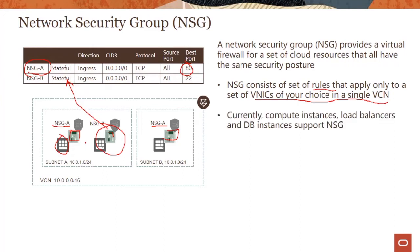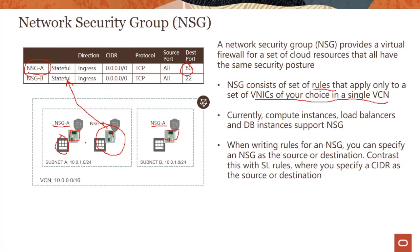Currently, a number of services support network security groups, and this list is always expanding, so always check the documentation. There is another key difference between NSG and security list: when writing rules for an NSG, you can specify another NSG as the source or destination. In contrast, with security list rules, you can only specify a CIDR. You can specify a service for both when going to a service gateway, but typically you use CIDR. In NSG, you can specify another NSG as the source or destination, which supports more complex scenarios.